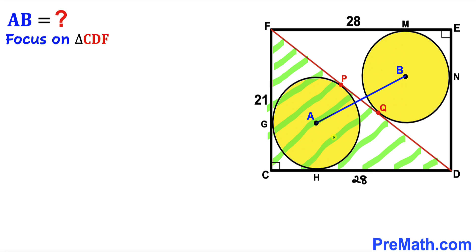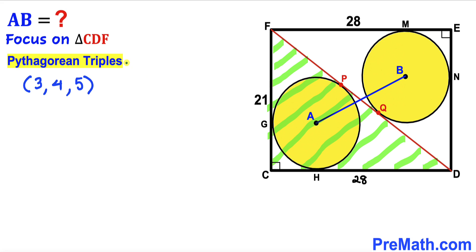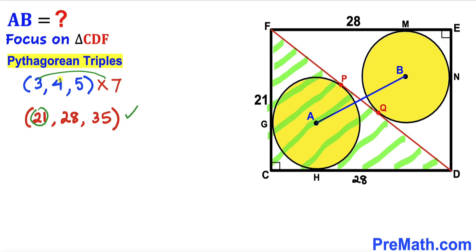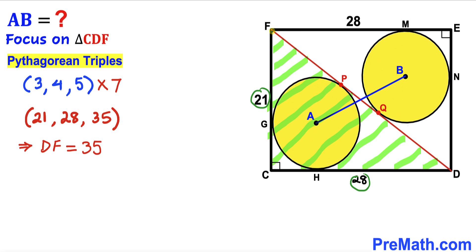Let's focus on right triangle CDF with side lengths 21 and 28, and calculate its longest leg, the hypotenuse. Recalling the Pythagorean triplet 3, 4, 5 and multiplying by 7: 3×7=21, 4×7=28, and 5×7=35. Since our side lengths are 21 and 28, the diagonal DF is 35 units.